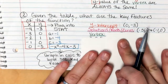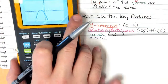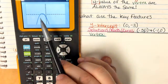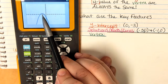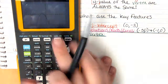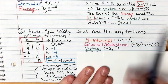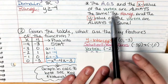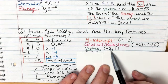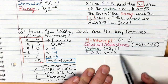The vertex is the highest or lowest point — in this case the highest, since the parabola opens downward. The vertex is at (−2, 1). Using our relationship, since the x-value of the vertex is −2, the axis of symmetry is x = −2.